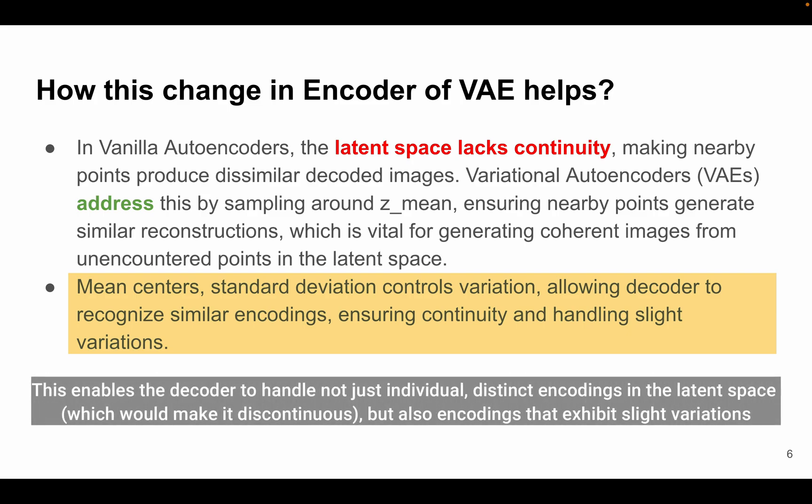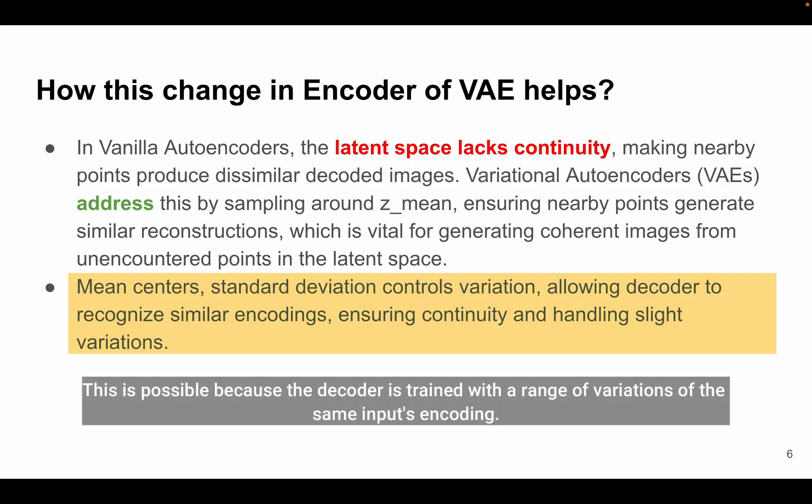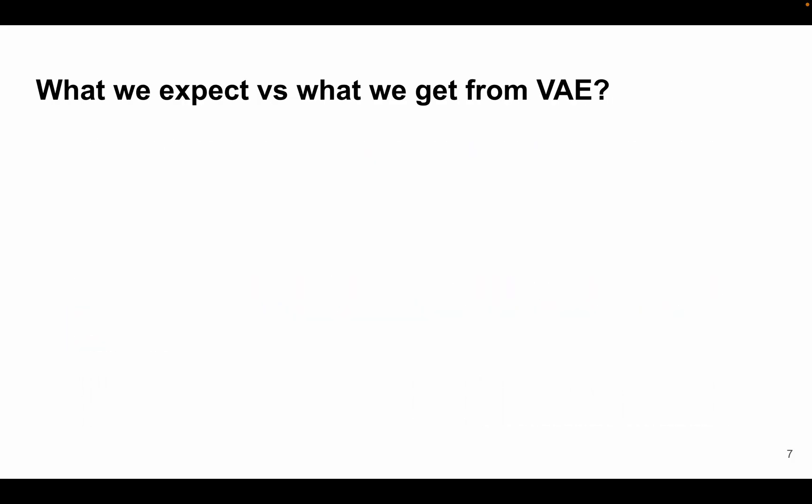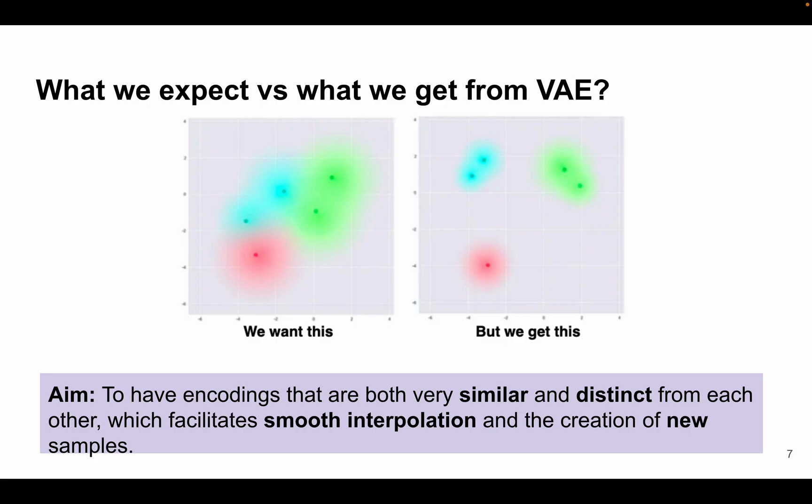Now this enables the decoder to handle not just individual distinct encodings in the latent space, but also encodings that exhibit slight variations. This is possible because the decoder is trained with a range of variations of the same input's encoding. So this is a very cool property of variational autoencoder. Now the goal of this variational autoencoder is to have encodings that are both very similar and distinct from each other, and this facilitates smooth interpolation and creation of new samples.